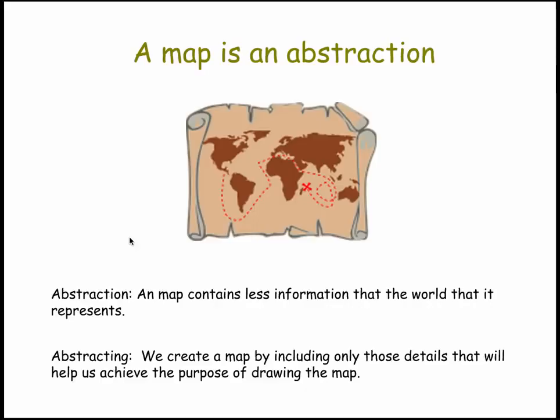Details are removed so you can focus in on the directions. We create a map by including only those details that will make it useful to us. If our purpose is getting from point A to point B, we don't need to see all the trees and mailboxes on the way. So that's a nice example of an abstraction.